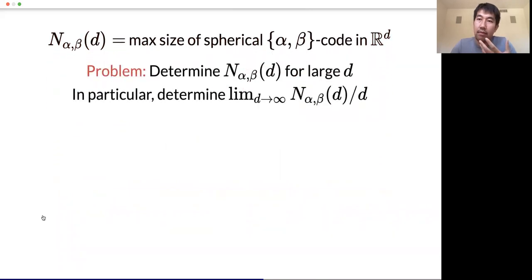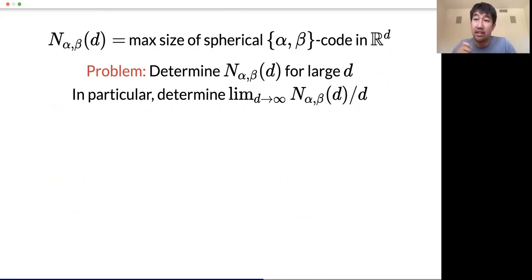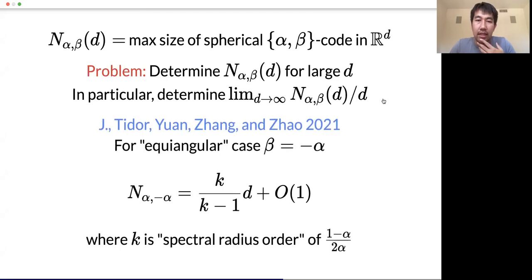The problem is about determining this function for large dimension. We know that this function behaves linearly as d grows. Therefore, as a first-order approximation, we want to know the linear coefficient in front of d — the limit of this function over d.